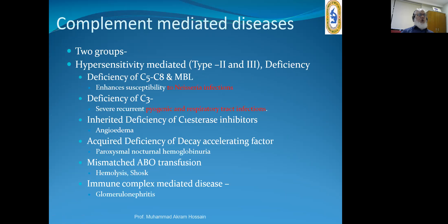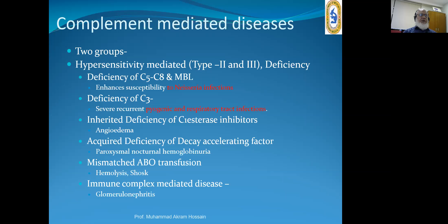Complement-mediated diseases fall into two groups: hypersensitivity-mediated and deficiency diseases. Hypersensitivity type 2 and type 3 are complement-mediated. Deficiency of C5 to C8 enhances susceptibility to Neisseria infection. Deficiency of C3 results in severe recurrent pyogenic and respiratory tract infections. Inherited deficiency of C1 esterase inhibitor leads to angioedema. Acquired deficiency of decay-accelerating factor leads to paroxysmal nocturnal hemoglobinuria. SLE is also complement-mediated and immune-complex-mediated (type 3 hypersensitivity).